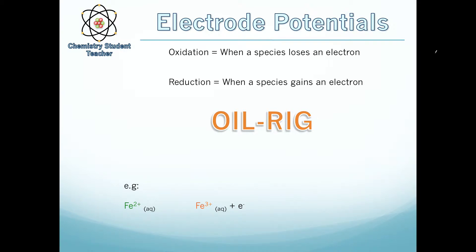This is going to be a quick revision video for electrode potentials. Electrode potentials are all about oxidation and reduction and the oxidation state of different species. The definition of oxidation is when a species loses an electron. Reduction is when a species gains an electron.